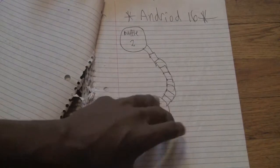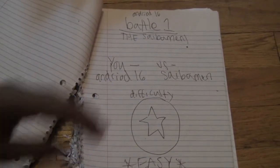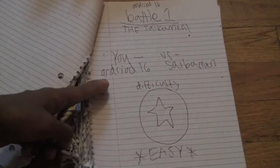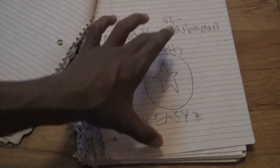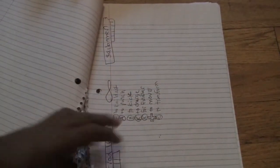Oh, and another new layout. So it says Android 16, Battle 1, the Cybermen, is what it's called. I get to be Android 16 versus Cybermen. Difficulty, it gives you the difficulty, and it says the difficulty is easy. So the layout is different.